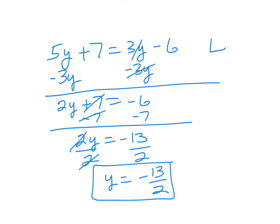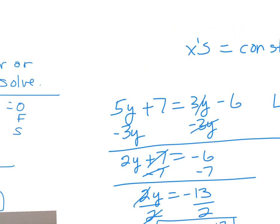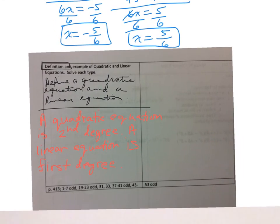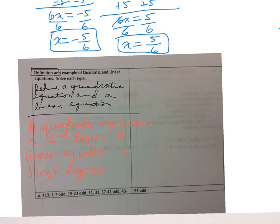You'll have the definition problem and then those two types of problems. Your review assignment starts on page 413, and the problems there will be very much like the problems you find on your test.